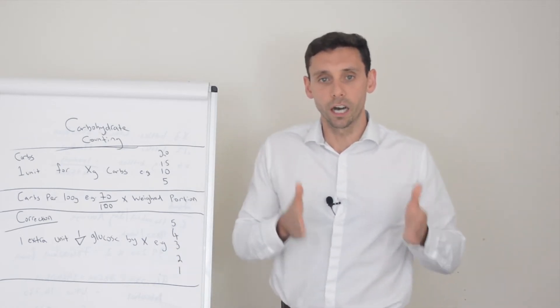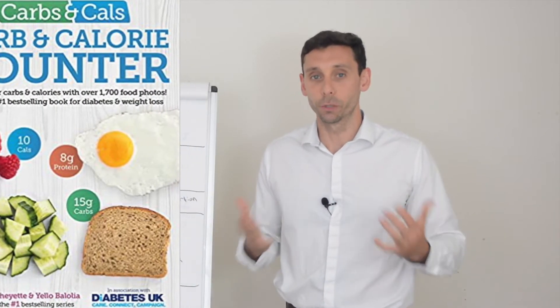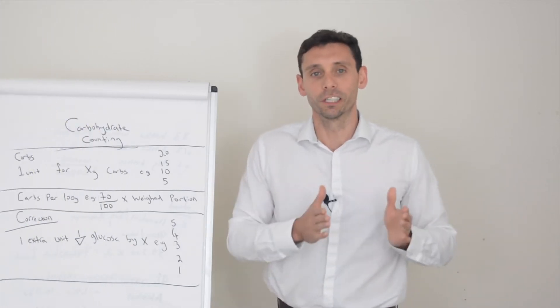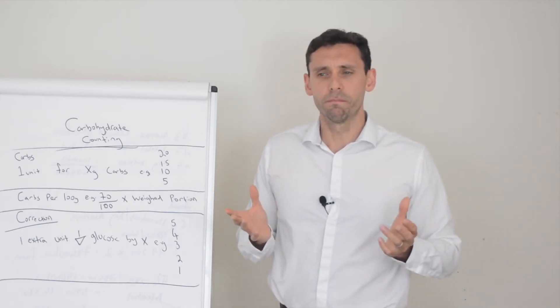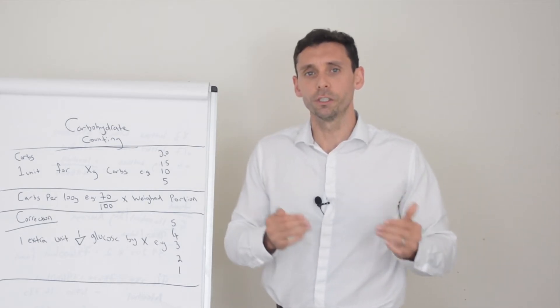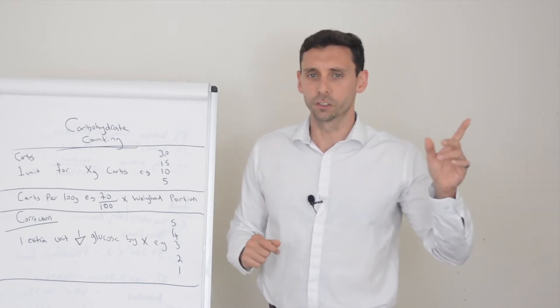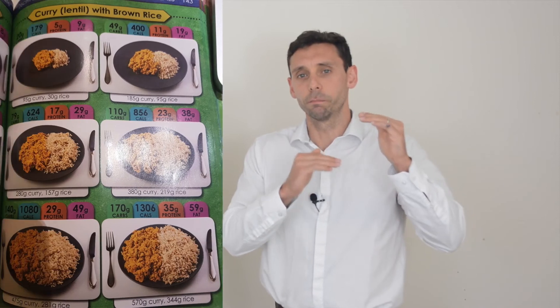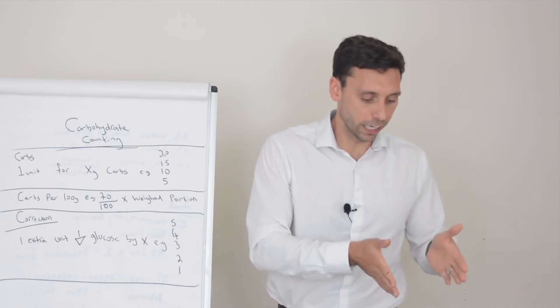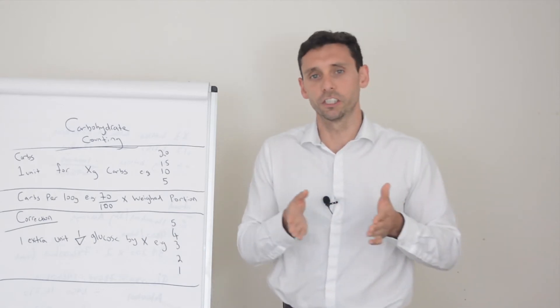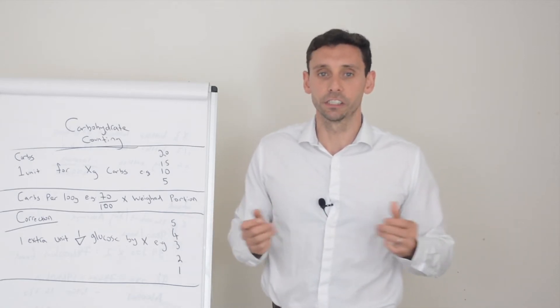There's a really good app called Carbs and Cals as in calories. My accent some people think I'm talking about actual cattle. I'm not. We're talking about carbohydrates and calories. Carbs and Cals. Really good app. You can buy it for about four pounds I think it is on the app store or you can buy the book and essentially this just gives you lots of different pictures. I'll try and bring it up on the screen now but it gives you lots of different pictures of different portions of carbohydrate containing foods and then you just look at the meal or the portion that most closely resembles your meal and it will tell you the carbohydrates and if you're interested the calories too.